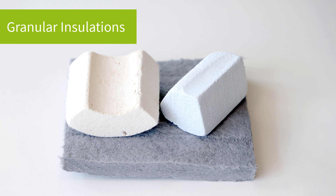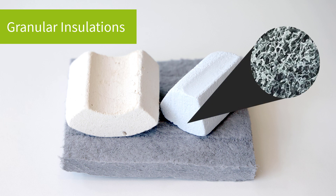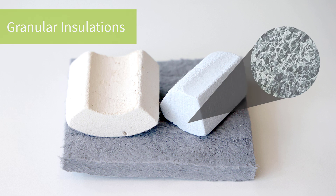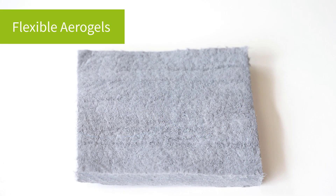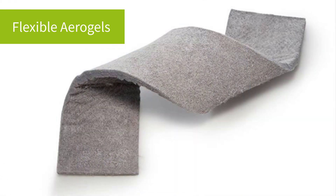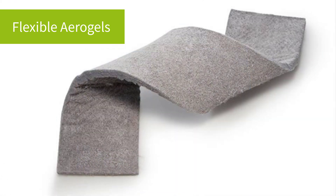Granular insulations are composed of small nodules that contain voids or hollow spaces. Gases can be transferred between the spaces, meaning granular materials generally have high water absorption and permeability. Granular materials can be further broken down into two different types. Flexible types, such as aerogels and certain microporous products, can be bent without a loss in strength or integrity.